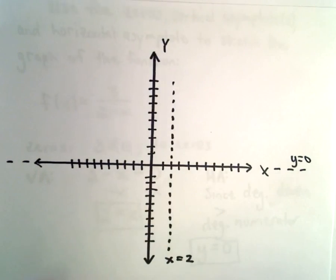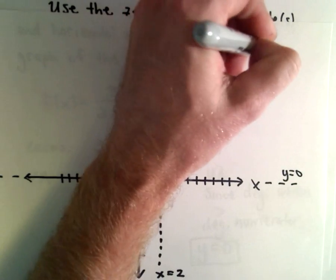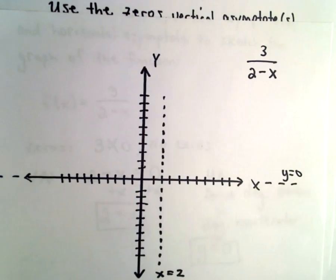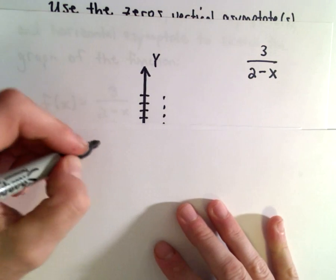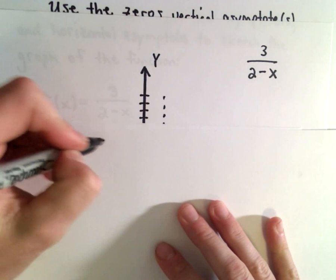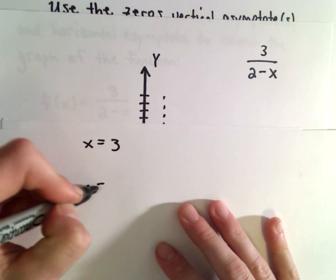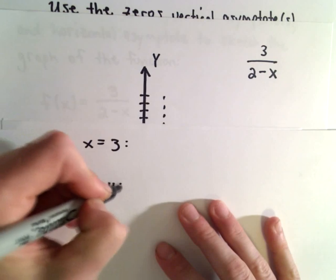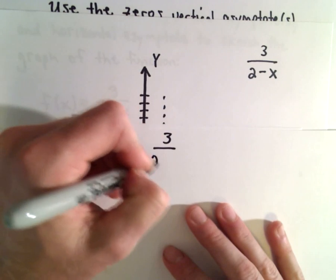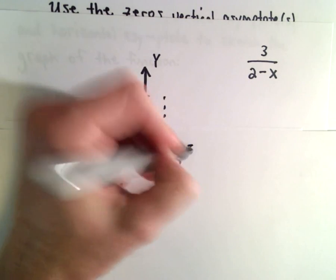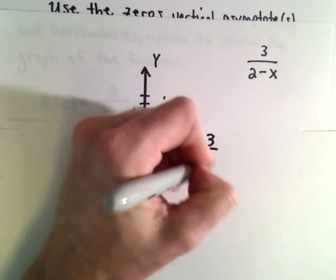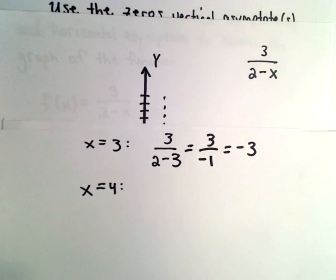But now let's just plot a few points. I'm going to put in a couple points. Let's use maybe x equals 3 and x equals 4. So we would have 3 over 2 minus 3, if I substitute in x equals 3. That's going to be 3 over negative 1 or negative 3.